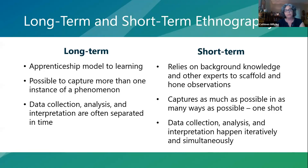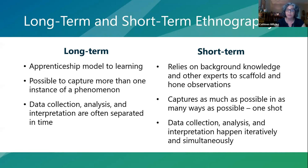With long-term ethnography, there tends to be an apprenticeship model — learning from participants about their cultural realities. It's possible to capture more than one instance of a phenomenon, and data collection, analysis, and interpretation are often separated in time. With short-term ethnography, you rely on background knowledge and other experts on your interdisciplinary team to scaffold and hone your observations. You try to capture as much as possible in as many ways as possible — not just observation but a variety of methods — and data collection, analysis, and interpretation happen iteratively and at the same time.